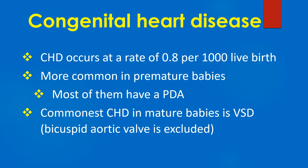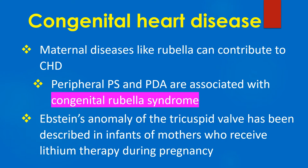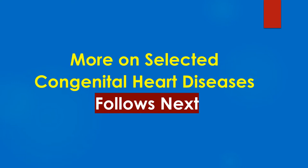Congenital heart disease occurs at a rate of 0.8 per 1000 live births. They are common in premature babies, with most having a patent ductus arteriosus. In mature babies, the commonest CHD is ventricular septal defect if bicuspid aortic valve is excluded. Maternal rubella can contribute to CHD — peripheral pulmonary stenosis and PDA are associated with congenital rubella syndrome. Ebstein's anomaly of the tricuspid valve has been described in infants of mothers who received lithium therapy during pregnancy.